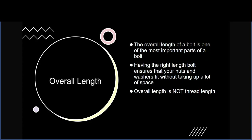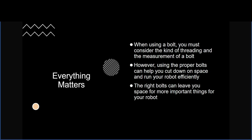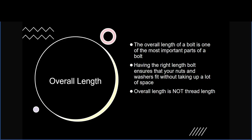When using a bolt you need to consider the kind of threading and the measurements of the bolt. Using the proper bolts can help cut down on space and run your robot or technology efficiently — the right bolts can leave space for more important things such as wiring and other tech components. The overall length of the bolt is one of the most important parts: having the right length ensures your nuts and washers fit without taking up too much space, though overall length is not the same as thread length.